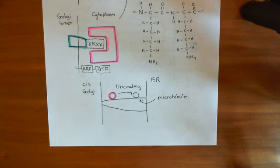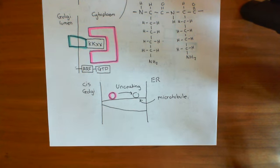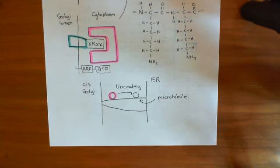Welcome to this next video in which we are discussing Golgi to ER, or retrograde transport of proteins. We've discussed how we have two types of protein, potentially, that we want to move back from the Golgi to the ER: luminal proteins and membrane proteins.